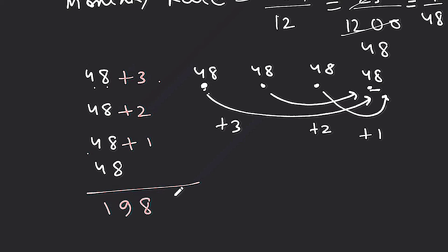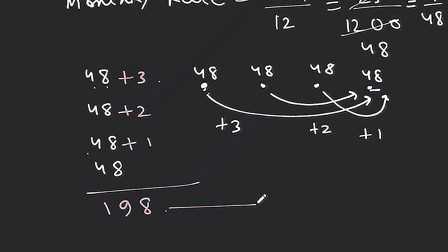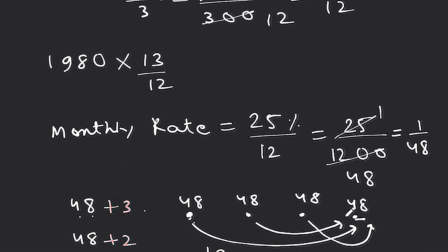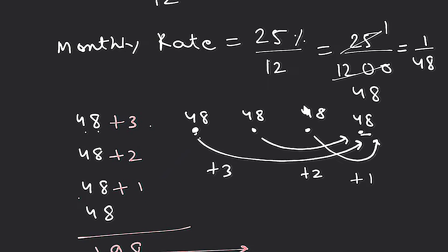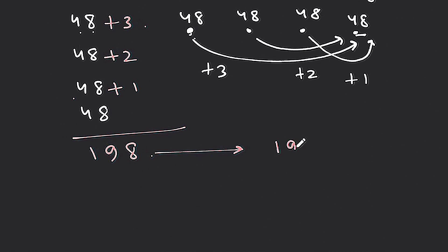Adding everything up, the total comes to 198. So the total payment works out as 1980 into 13/12. The amount 198 is obtained from this calculation. The total payment of 1980 × 13/12 gives us the basis for computing the monthly installment.